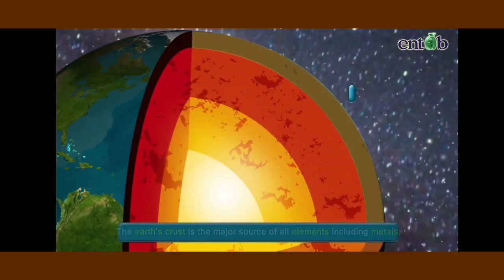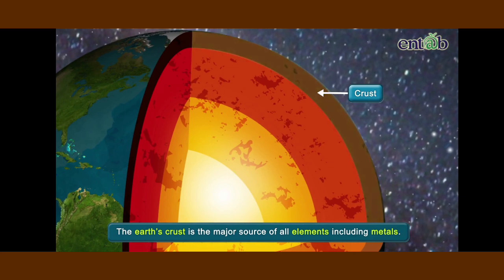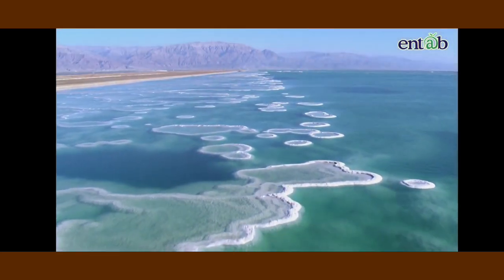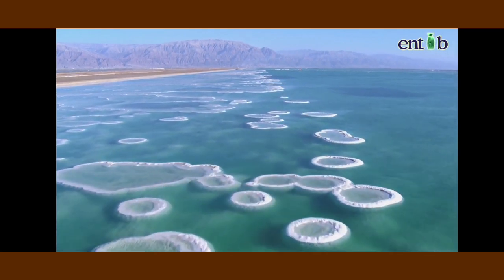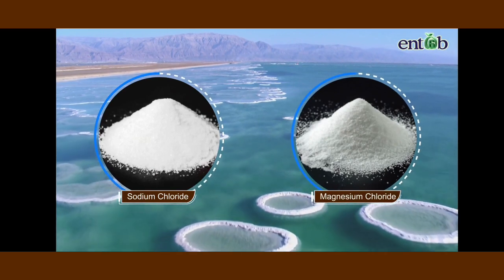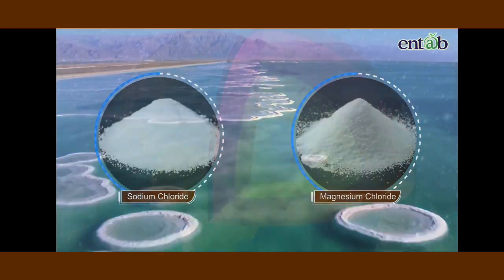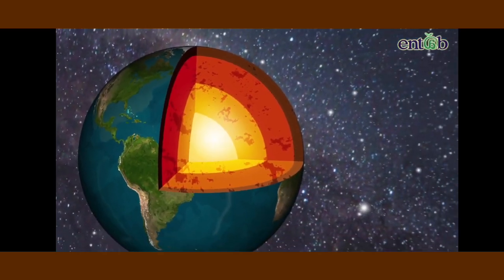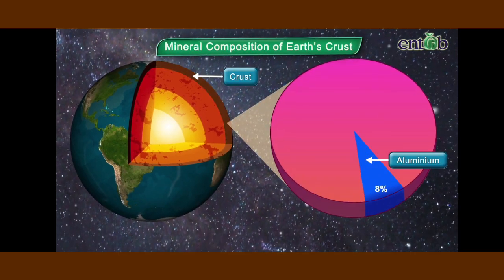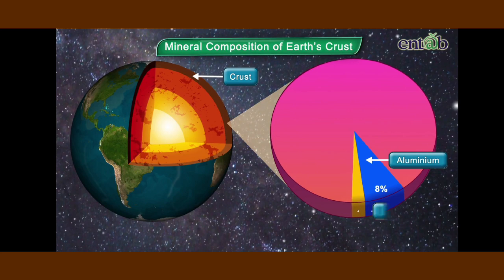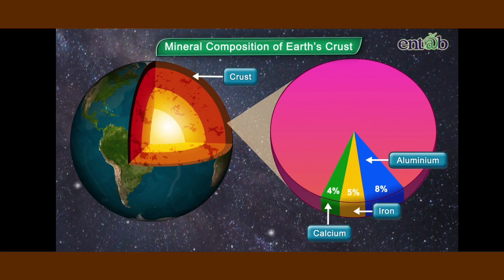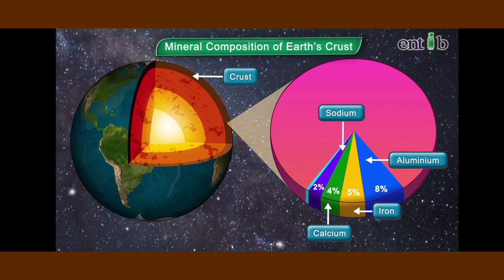The earth's crust is a major source of all elements including metals. Seawater also contains salts of many metals like sodium chloride, magnesium chloride, etc. Did you know that the most abundant metal in the earth's crust is aluminium at about 8%, followed by iron at about 5%, calcium at about 4%, and sodium at about 2%?